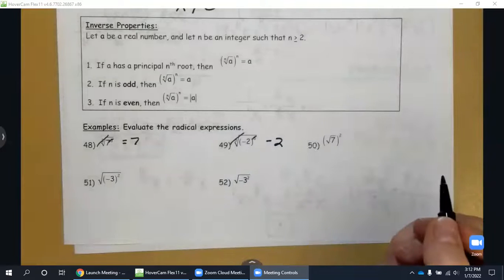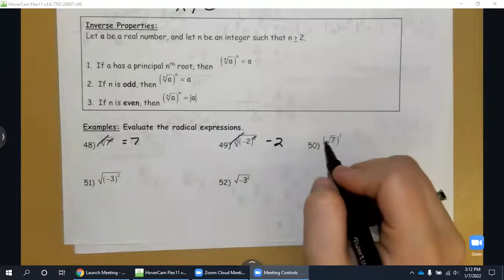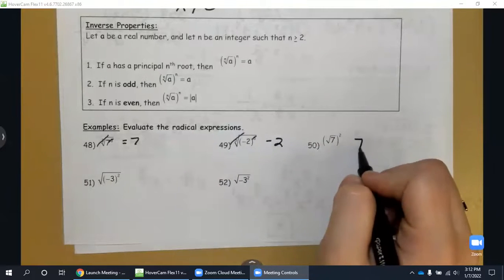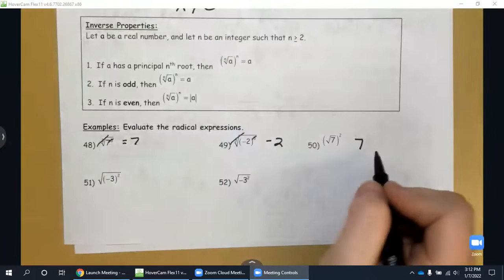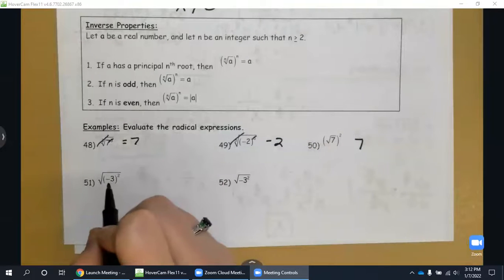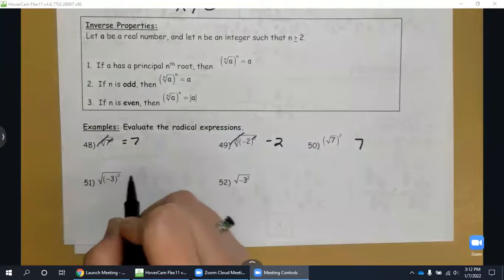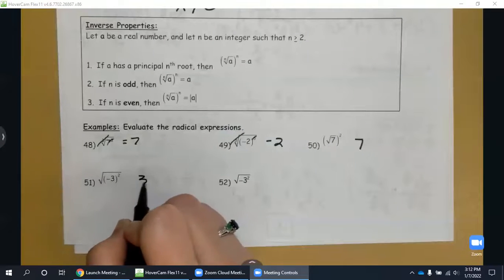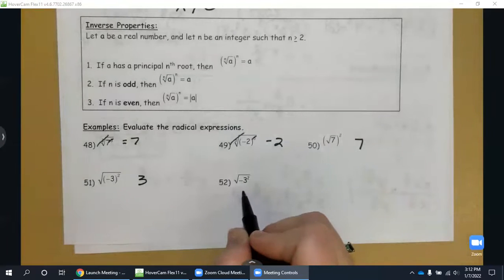50, square root of seven squared, seven, even roots, absolute value, seven, positive seven. Square root of negative three squared, again it's going to be the absolute value, so positive three.